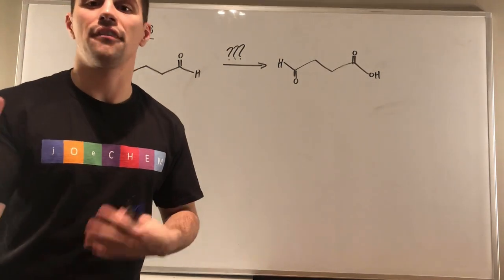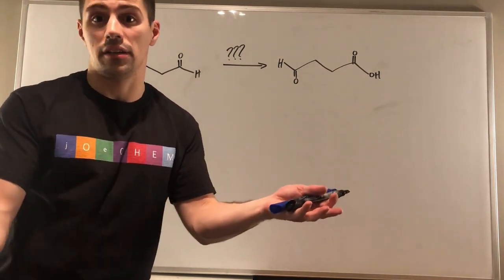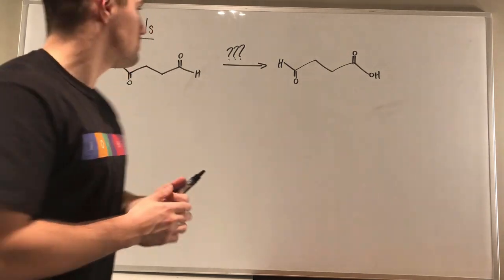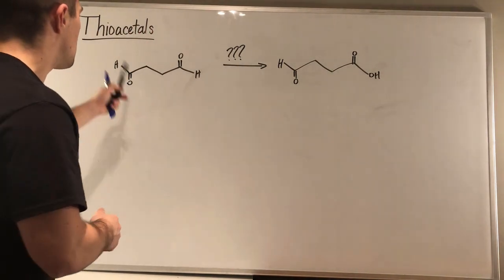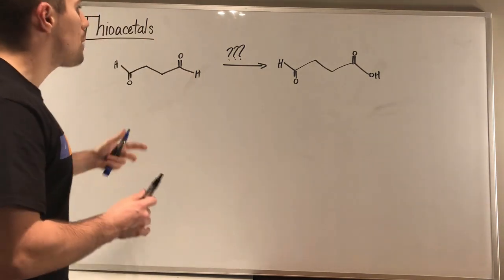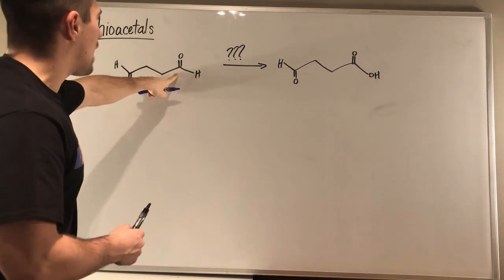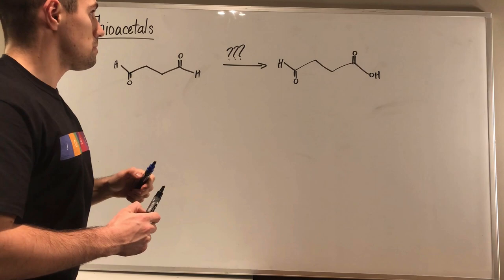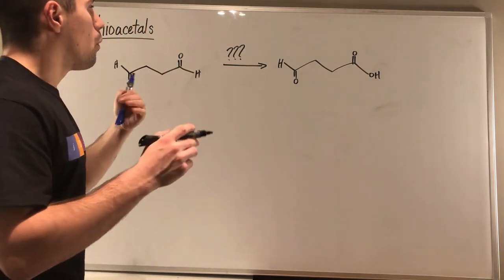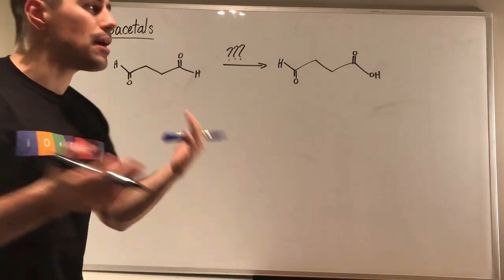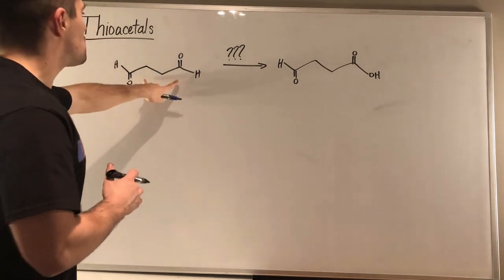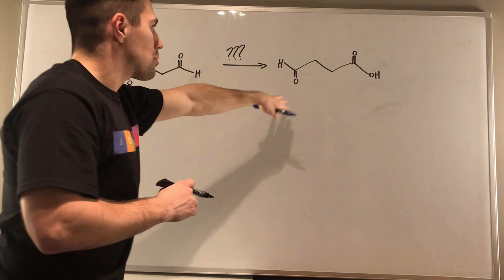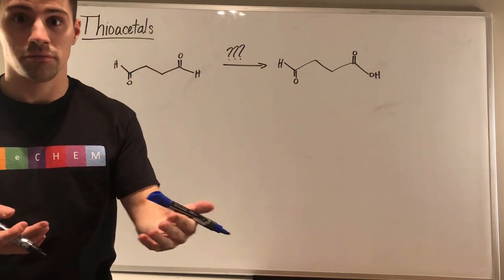Okay gang, so I just want to do a quick example to kind of illustrate where thioacetals can help you out in like a synthetic situation or maybe even a mechanism. But basically why you would ever reach for one, right? Okay, so let's just say you needed to provide the steps from this starting material to this product, right? So basically we have two aldehydes and we're just seemingly going to oxidize the one aldehyde up to a carboxylic acid, right? So what is the best way we can do this? So in my mind the best way we can do this is if we can somehow protect, so this is symmetrical, right? So we can just protect one of the aldehydes, then oxidize and then deprotect. I feel like that would be the best way to accomplish this reaction.